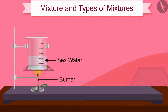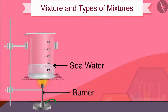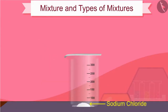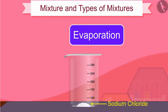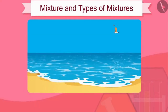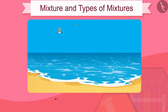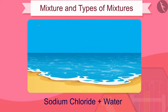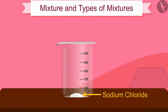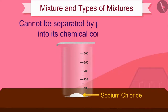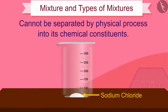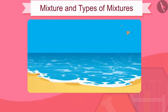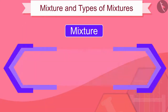What do you see? Absolutely right — sodium chloride dissolved in sea water is separated from water due to evaporation. Therefore we can say that sea water consists of sodium chloride and water. However, sodium chloride is itself a substance and cannot be separated by a physical process into its chemical constituents.